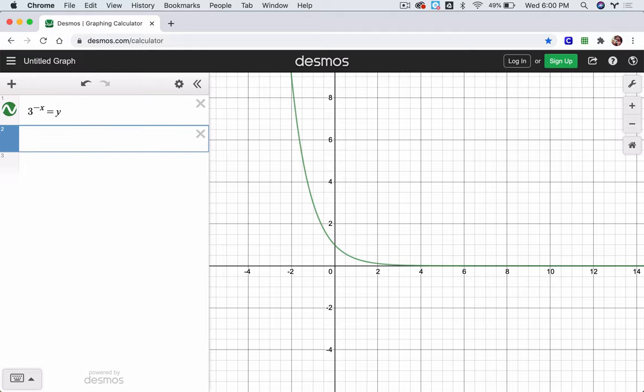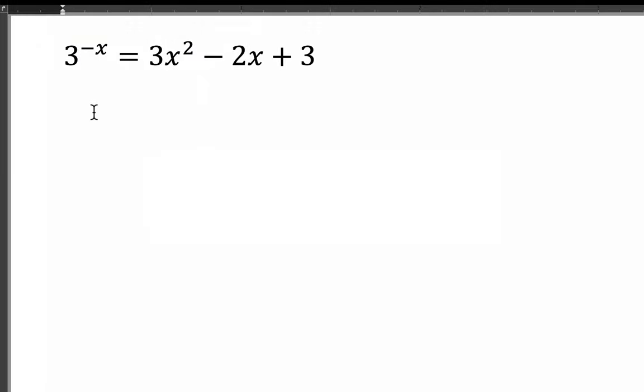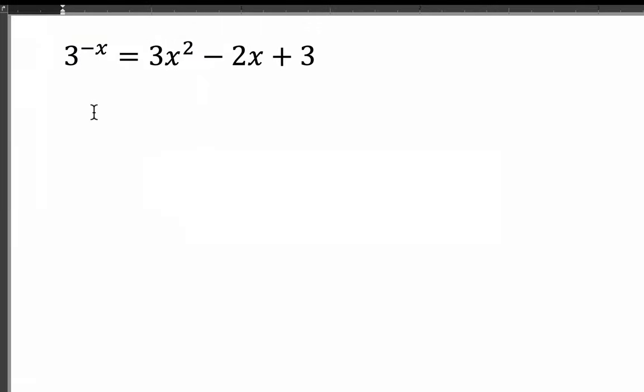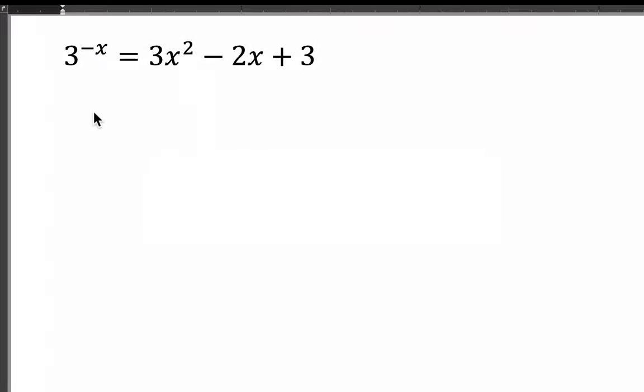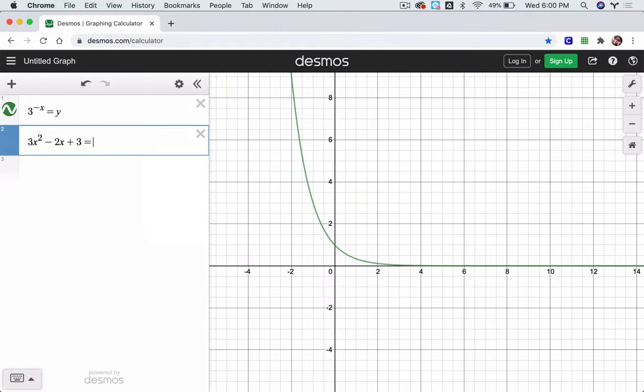Second function will be the other side. Let's do that next. 3x squared, we've got a parabola, minus 2x plus 3. 3x squared, minus 2x plus 3. Let me check if I got that right. Yep, okay. And that's our second function.